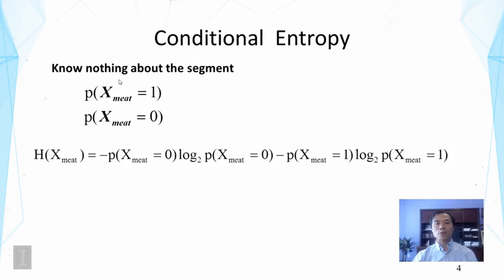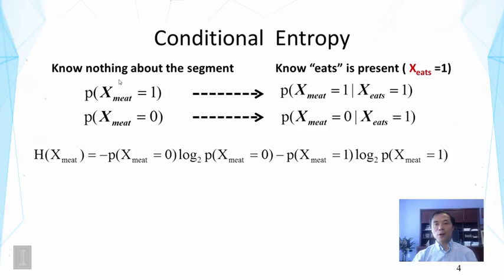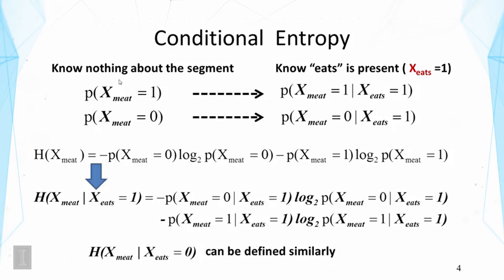Suppose we know 'eats' is present — we now know the value of another random variable that denotes 'eats'. That changes all these probabilities to conditional probabilities, where we look at the presence or absence of 'meat' given that we know 'eats' occurred in the context. If we replace these probabilities with their corresponding conditional probabilities in the entropy function, we get the conditional entropy.